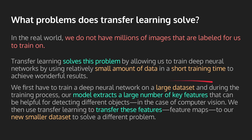Transfer learning will first extract large numbers of key features from a large labeled dataset with millions of data points. That helps us detect different objects in the case of computer vision. Then we use transfer learning to apply those features to our new smaller dataset to solve a different problem. Features are also called feature maps — I discussed what feature maps are in my convolutional neural network video, so feel free to check that out to understand this video better.